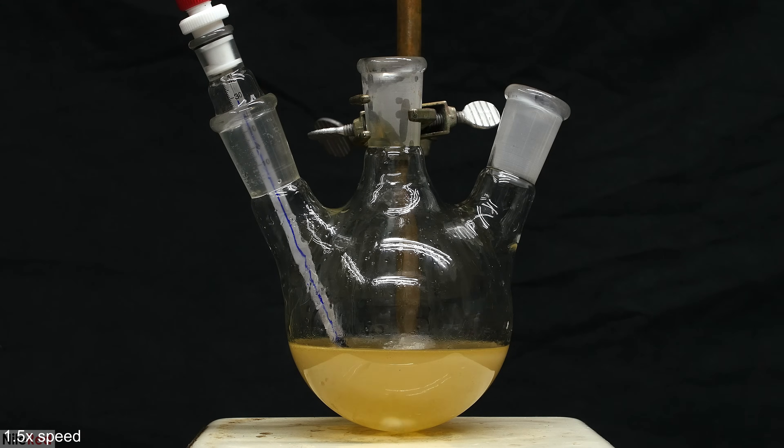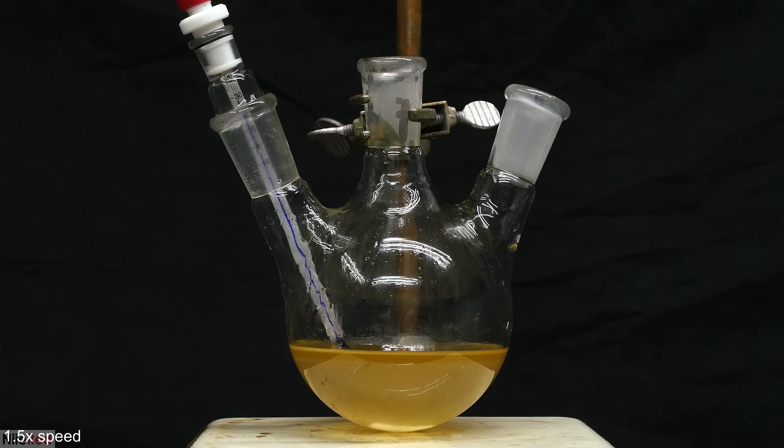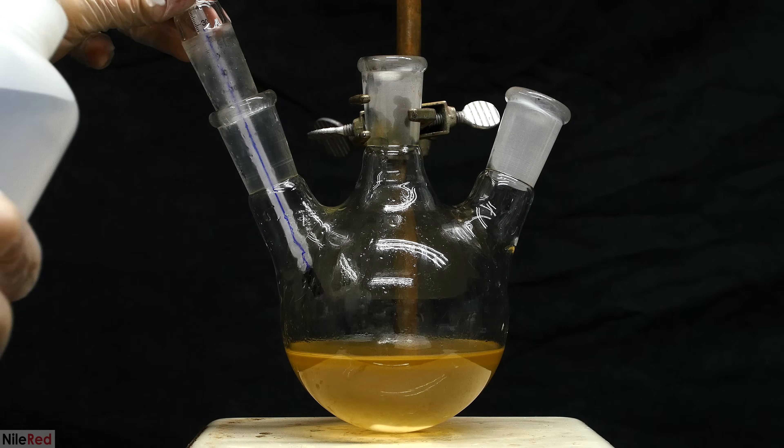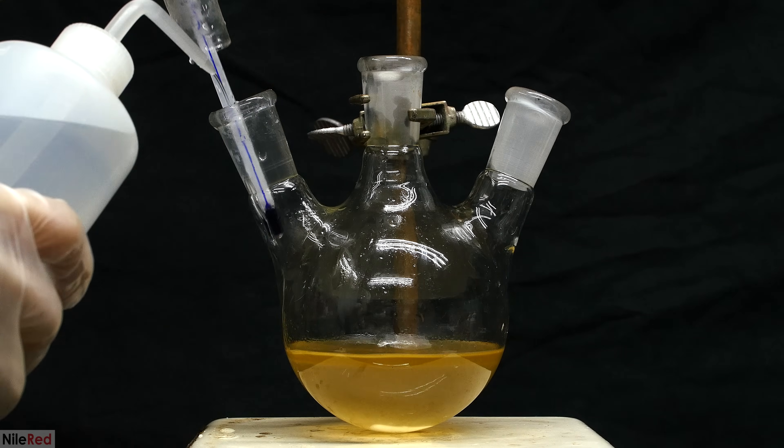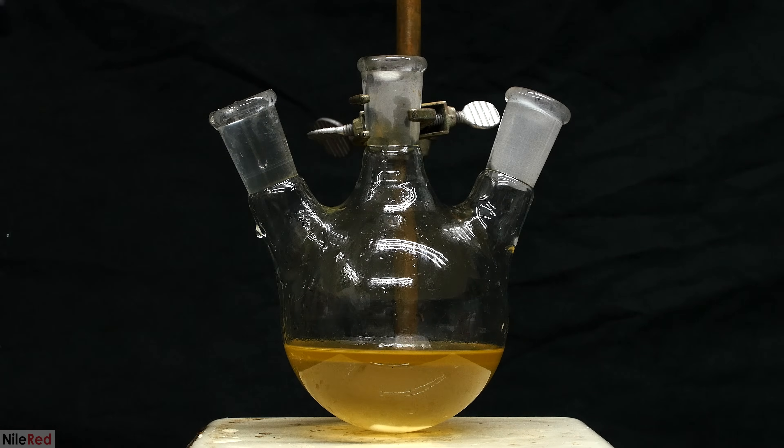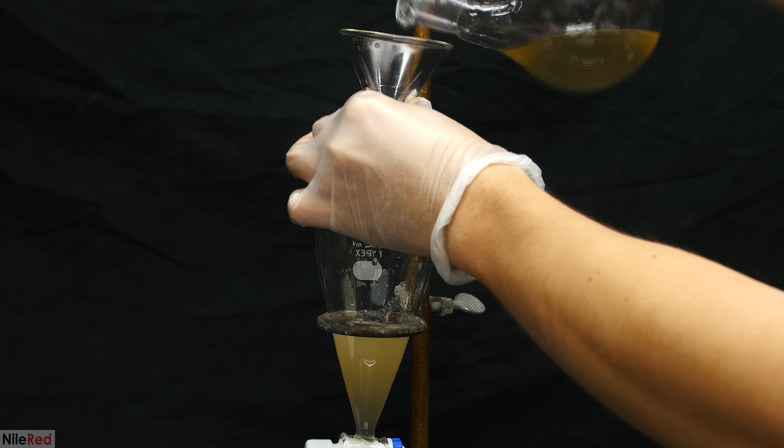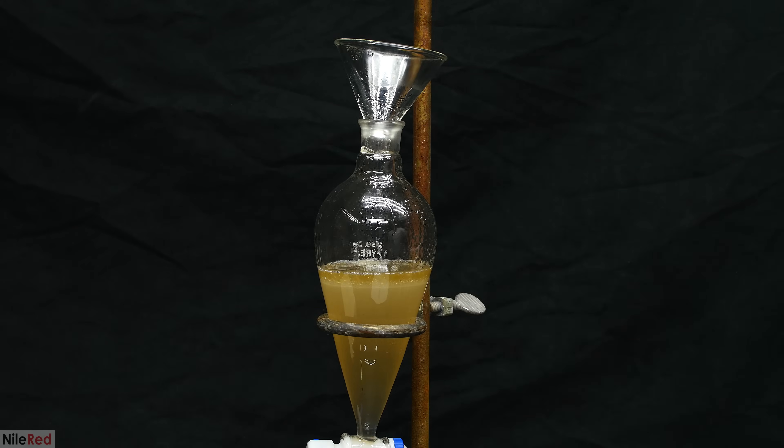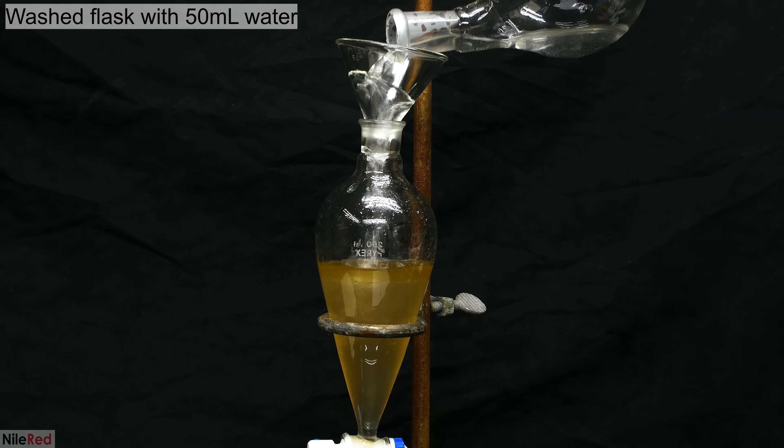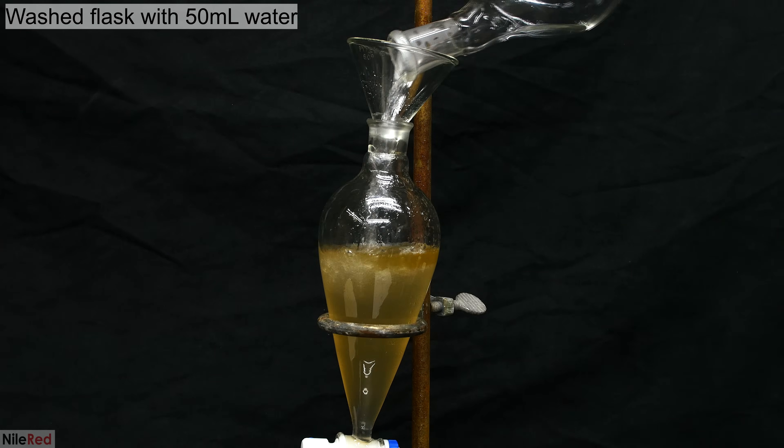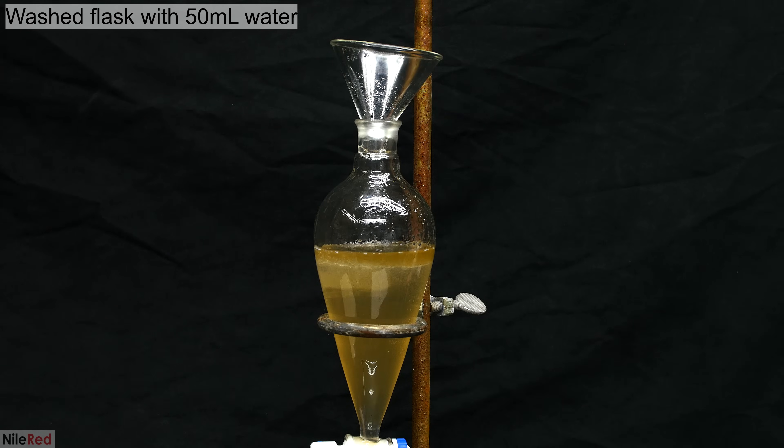Once all the sodium iodide had dissolved, I turned off the stirring, and we can see that things separate into two different layers. As I said before, anisole is less dense than water, so the upper layer here is our desired product. Before moving on, I take out the thermometer and I rinse it with a little bit of water. Everything is then poured into a separatory funnel. The round bottom flask is washed with about 50 milliliters of water, and this is also added to the separatory funnel.